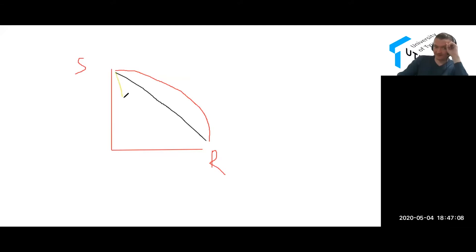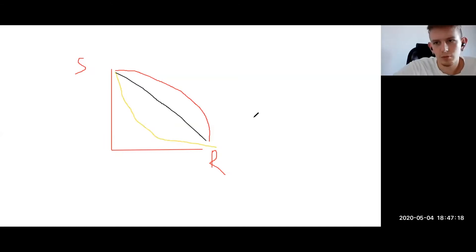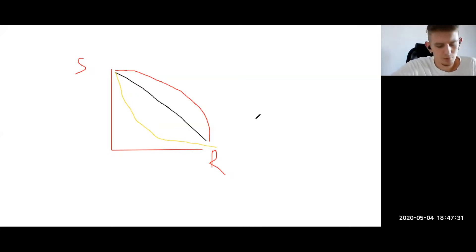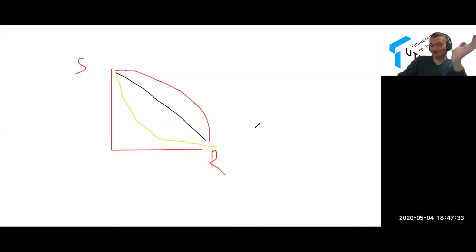And finally, if we have something below the log normal—a curve that bends inward—that one is called primate, or also concave. Primate and concave are two names for the same type. And why it's called primate, we'll talk about in just a second.